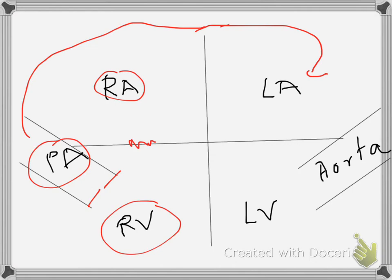And then it comes back to the left atrium. This is the mitral valve here, this is the left ventricle, this is the aortic valve, and the aorta.